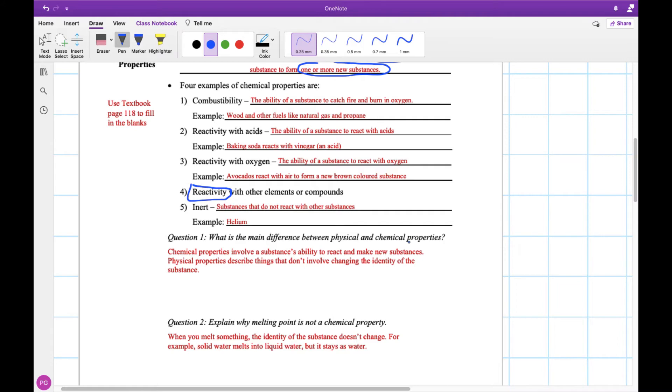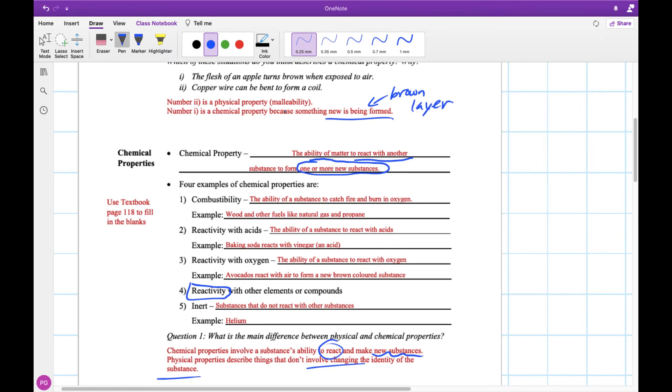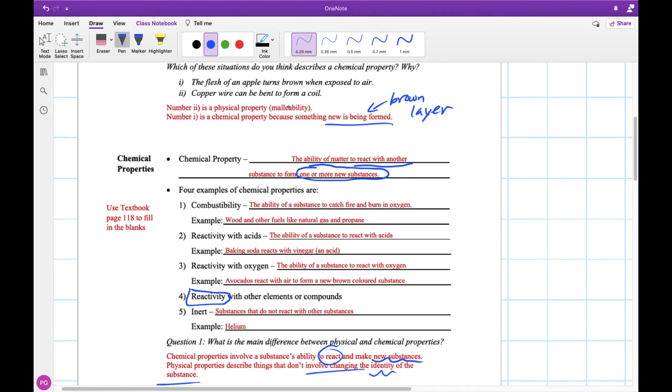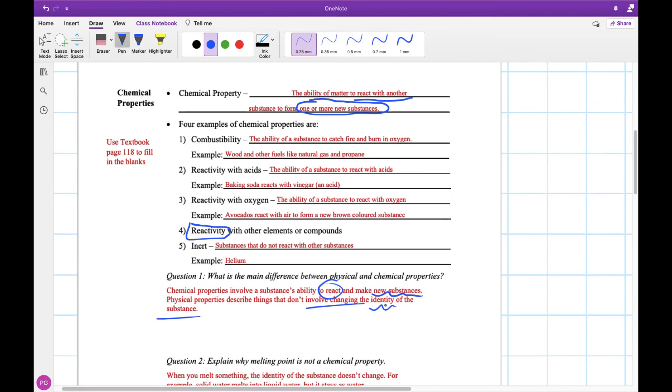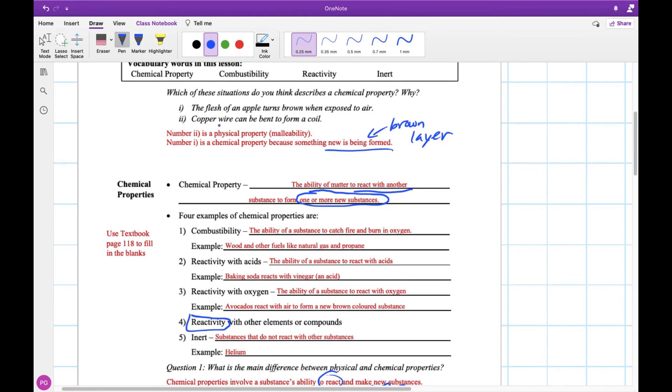So what's the main difference between physical and chemical? Chemical properties involve a reaction. Again, this reaction and making new substances, while physical properties don't involve changing the substance. So if we think about an example that we had at the top here, malleability, we're not changing the identity of the substance. We're not changing the copper wire into a different type of metal when we bend it. We're just changing the shape. So when we talk about the identity, we're talking about the type of substance that we had.